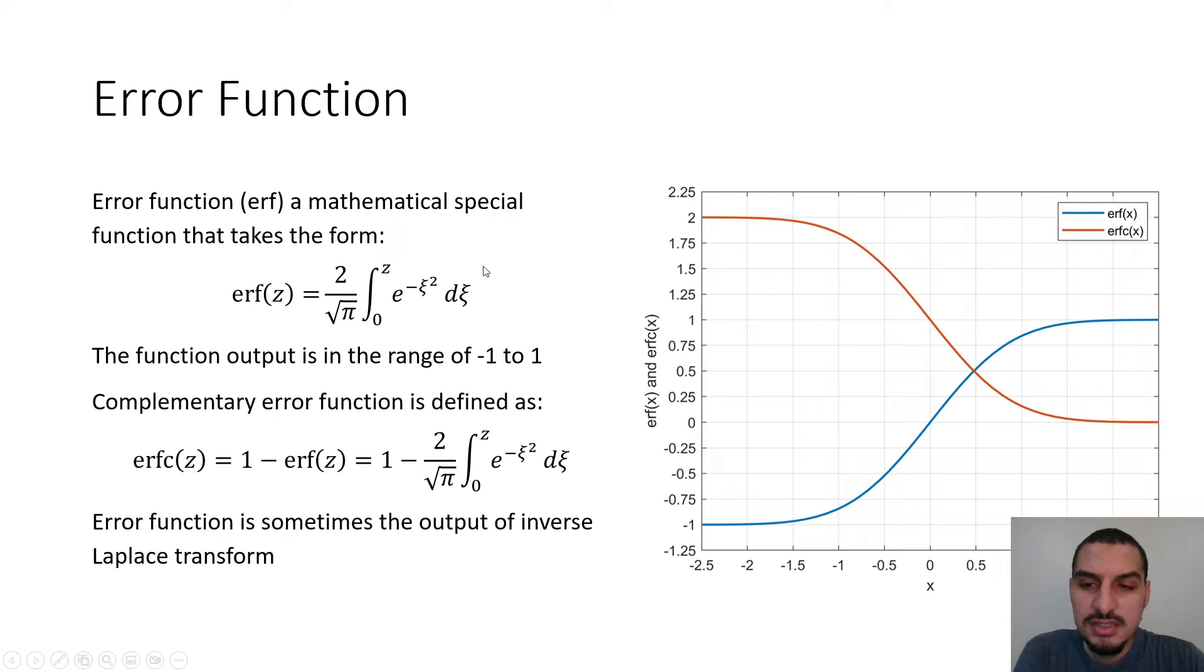The error function is, this is the mathematical representation. It's 2 divided by square root of pi multiplied by the integration from 0 to z of exponential minus zeta squared d zeta. Zeta is just a dummy variable, a variable that's used to do the integration, but at the end this integral would be a function of z. Because this zeta is going to be from 0 to z, so it's going to take the value of z or 0, so it's a function of z.